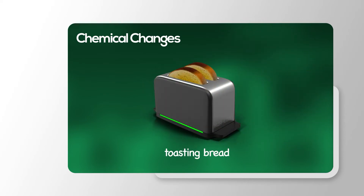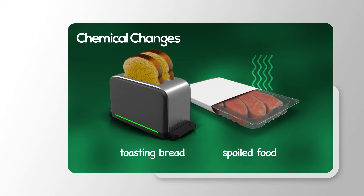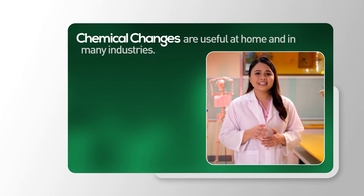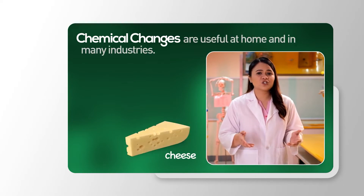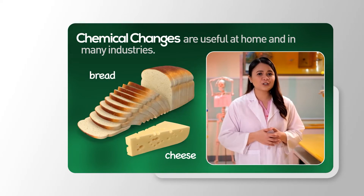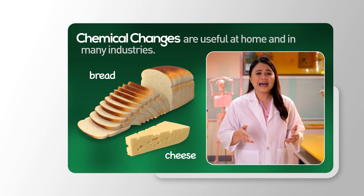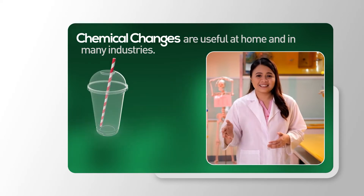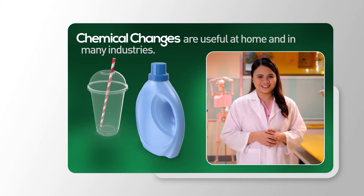Some chemical changes occur in our food. When making toast, intense heat causes the bread to burn, which means chemical change has occurred. Spoiled food? Chemical change. Chemical changes are useful at home and in many industries, like in making our favorite cheese or even our favorite bread. It is also the kind of change that happens in manufacturing companies that produce plastics, detergents, and other products.